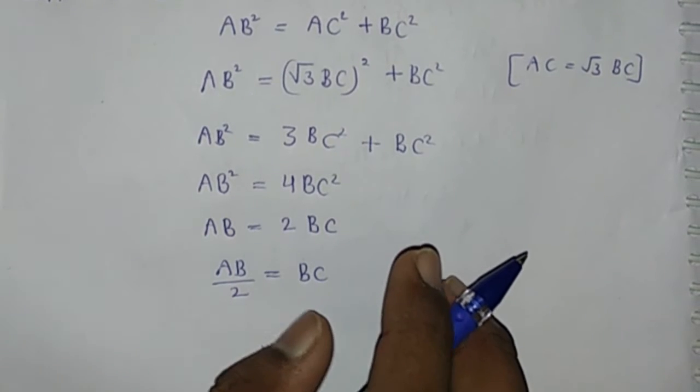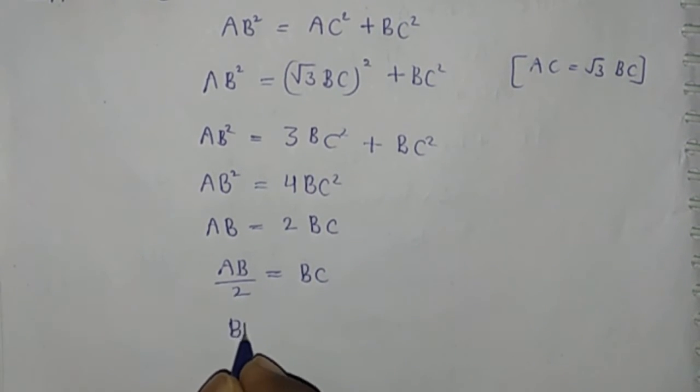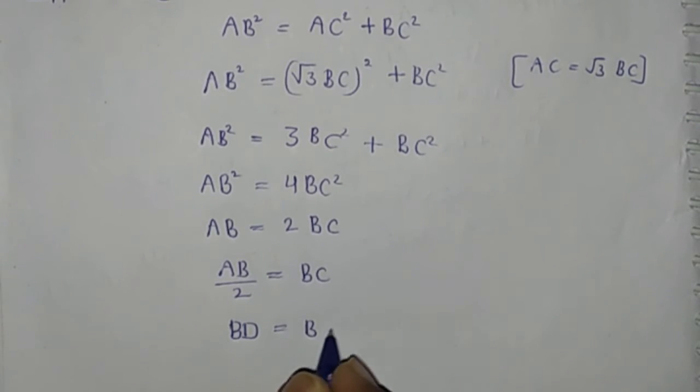But D is the midpoint of AB, so half of AB equals BD. Then BD equals BC.